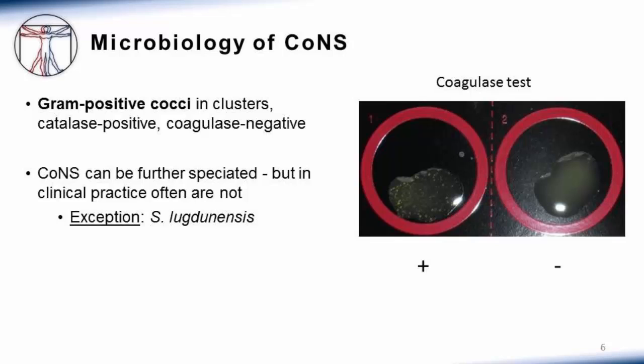There is an exception to this. There's one species of coagulase negative staphylococci — staphylococcus lugdunensis — that tends to cause more virulent disease, more akin to staph aureus, and would be treated like staph aureus. So in our lab, if they identify a coagulase negative staphylococcus isolate, they'll do further testing to ensure it's not staph lugdunensis. If not, they'll report it simply as coagulase negative staphylococci without further speciation.